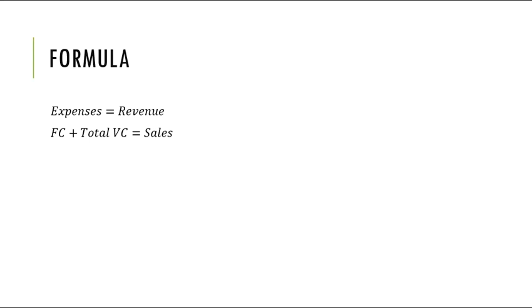If we drill down on the variable cost and the sales, we will see that fixed cost plus variable cost multiplied by the number of sales should be equal to the price multiplied by the number of sales. The advantage of this formula is that we can determine the number of sales based on the price given to us.